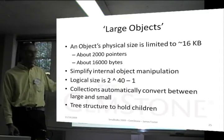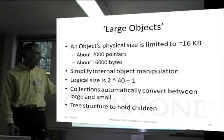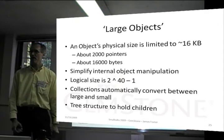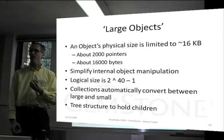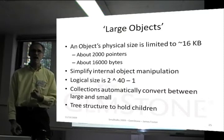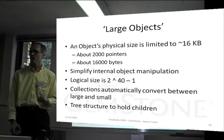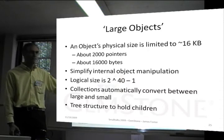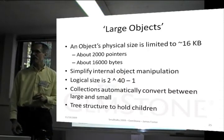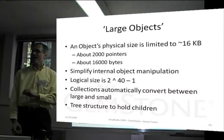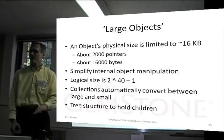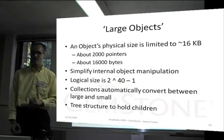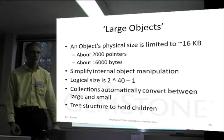The limit on the physical size allows us to simplify the internal manipulations of objects, so every physical object is small enough to fit on a page — we can write it to disk and manage it when we do. Large objects can be collections of small objects, and when you send 'at' and 'at put' to them, it automatically searches down through a tree structure to find the right place.